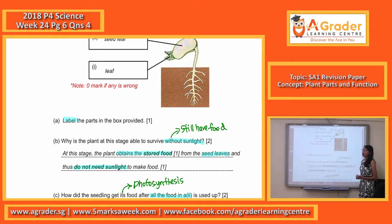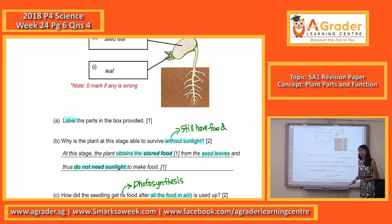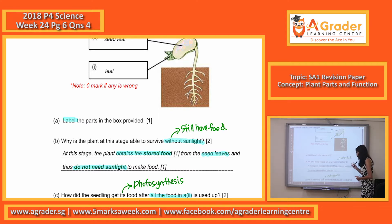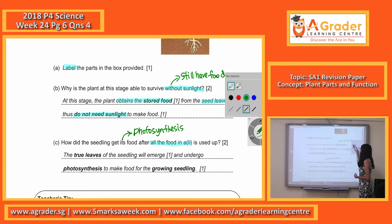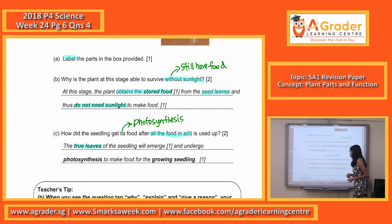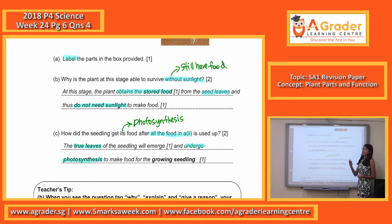At this stage, the plant already has true leaves. When you have true leaves, you have to mention that the true leaf will emerge and be able to trap sunlight, so it does not need the seed leaf to provide any more food. Please mention that the true leaves will emerge or appear, and the plant will undergo photosynthesis by trapping sunlight, so it can make food for itself and no longer needs the seed leaf.